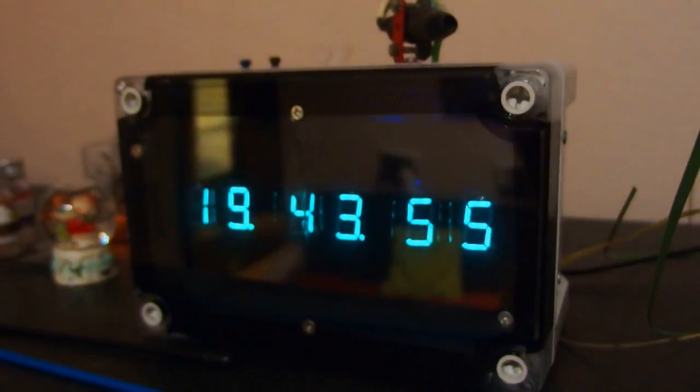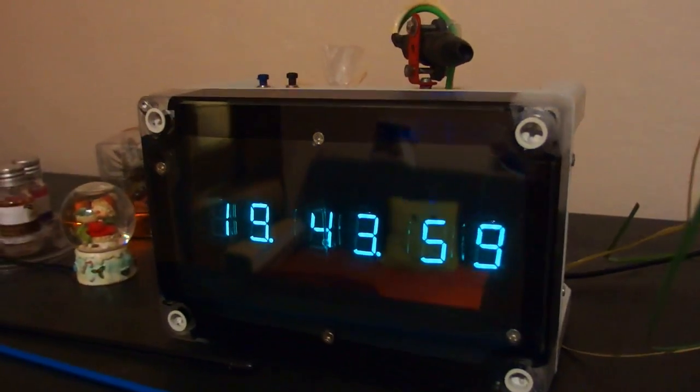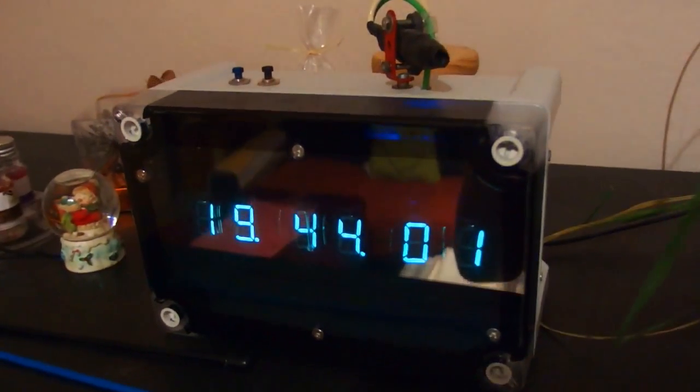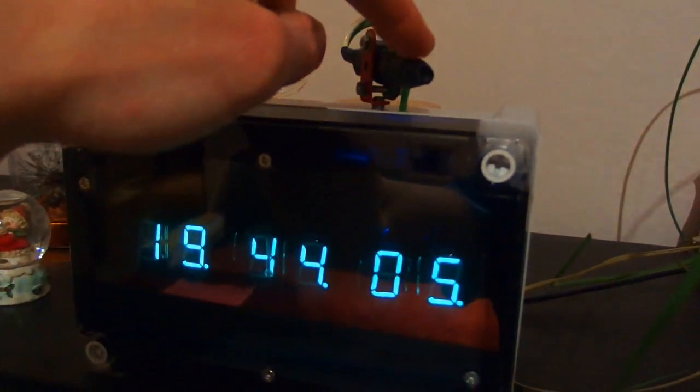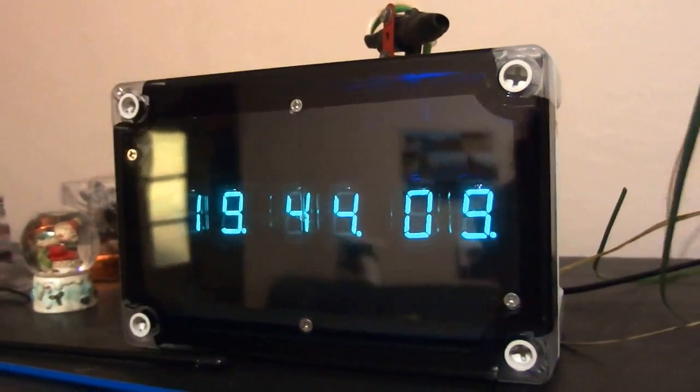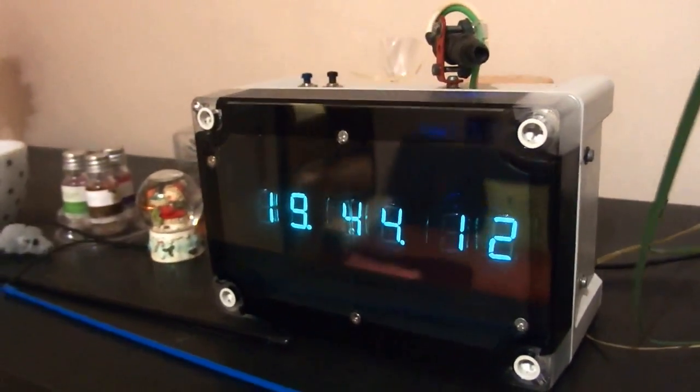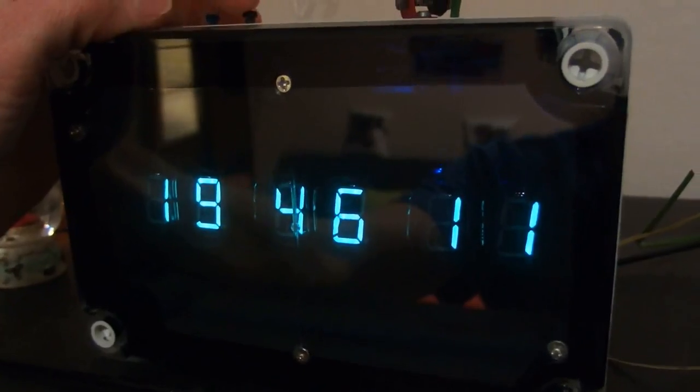And this one is not a Nixie clock. It's a vacuum fluorescent display clock. But it's also a nice piece. And it has a DCF 77 receiver so it's always accurate. And here you can see the tubes in it. And of course it also has date, alarm and a lot of other functions.